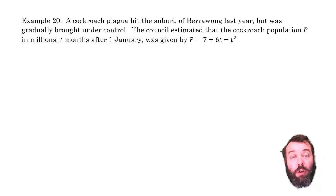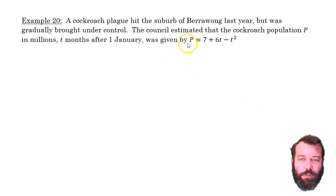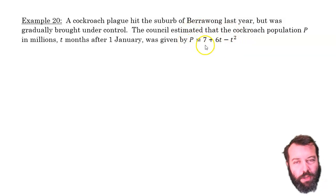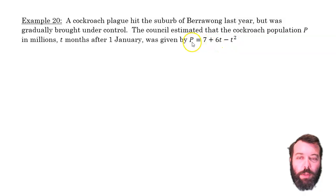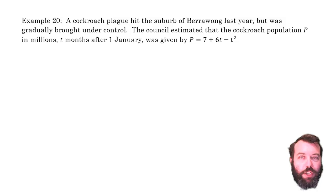I've got an example here with quite a few steps. A cockroach plague in Berrawong. The council came up with this quadratic equation where P is the population. The population in millions of cockroaches is P = 7 + 6t − t², where t is the number of months after the 1st of January.